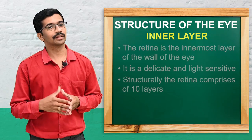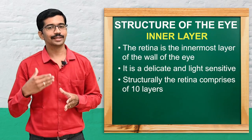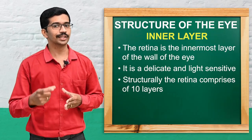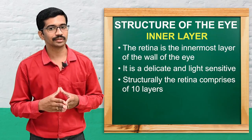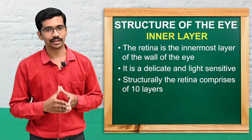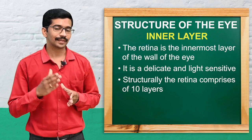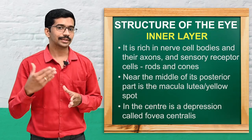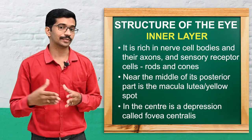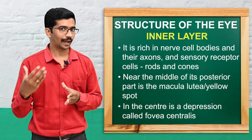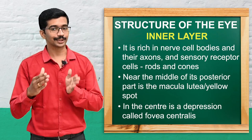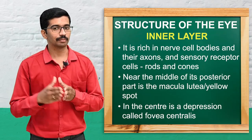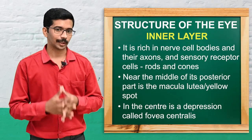The inner layer of the eyeball is the retina. It is a delicate, light-sensitive layer. Structurally, the retina has 10 layers. It is highly rich in nerve cell bodies and axons, and it contains sensory receptor cells — the rods and cones.